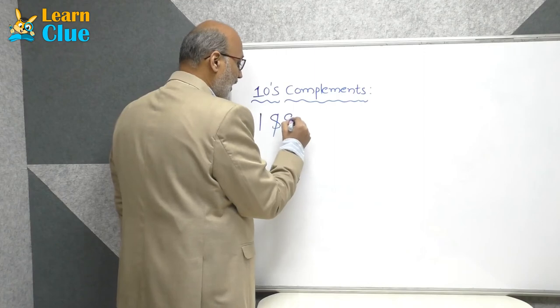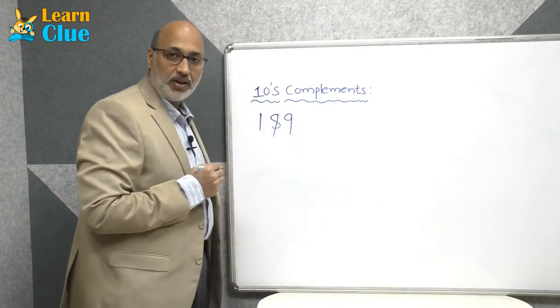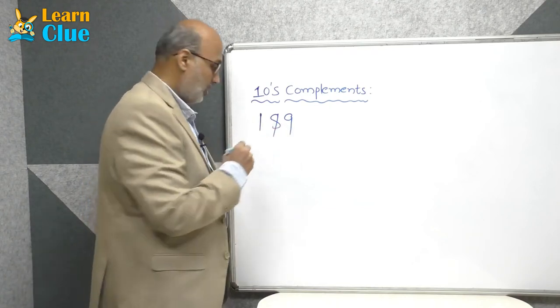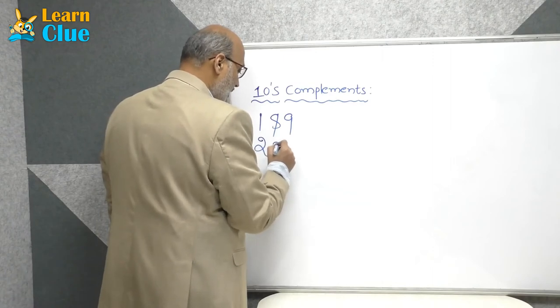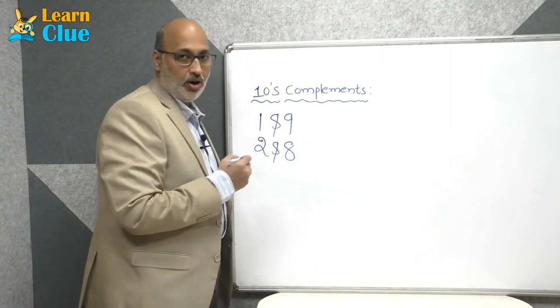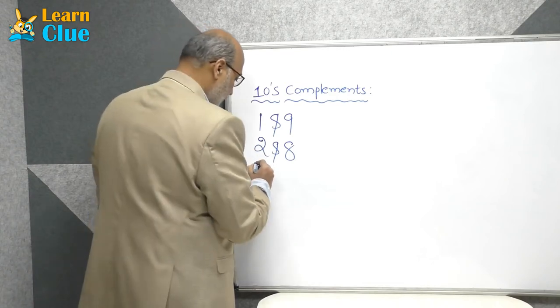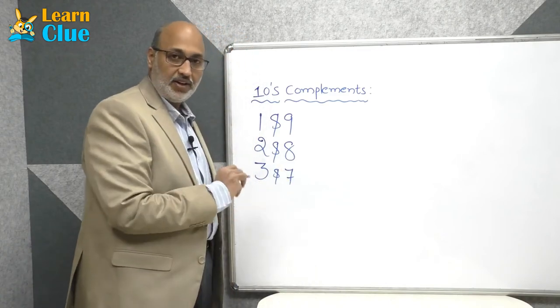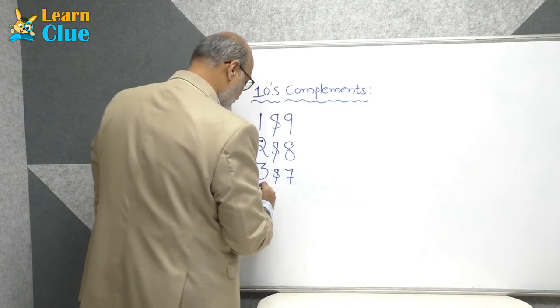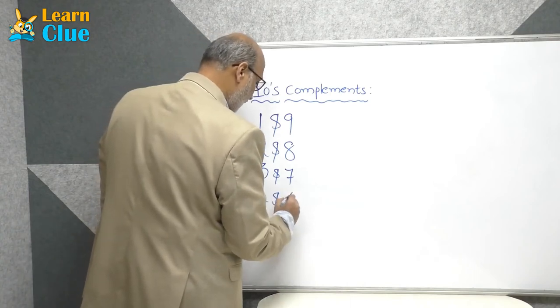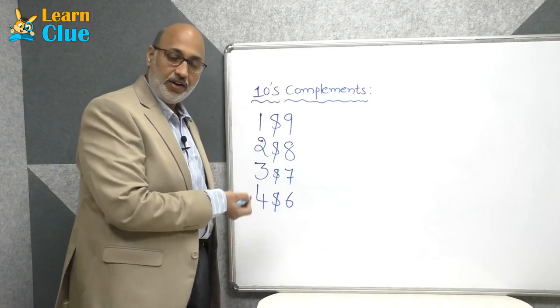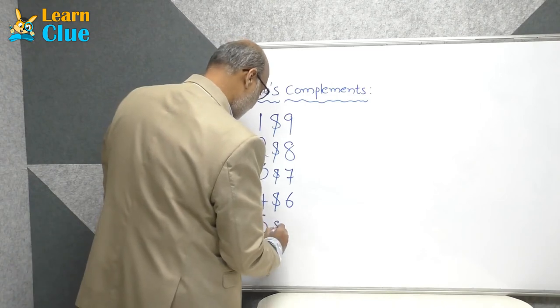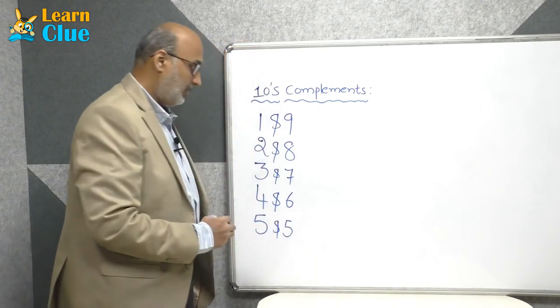1 and 9 is the perfect combination of a 10, or 9 and 1. Like that, 2 and 8 or 8 and 2. 3 and 7 or 7 and 3. 4 and 6 or 6 and 4 is also complement to the 10. 5 and 5.